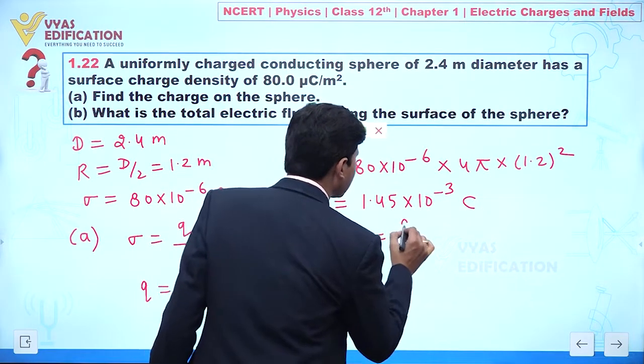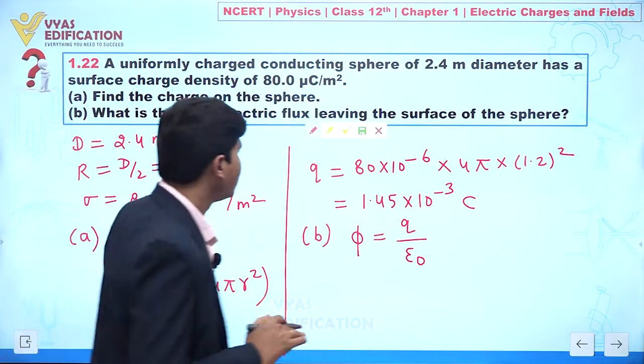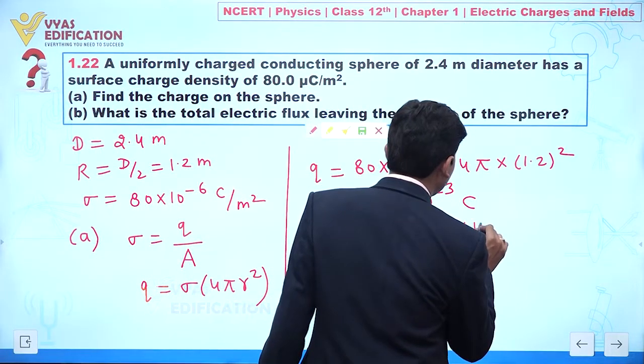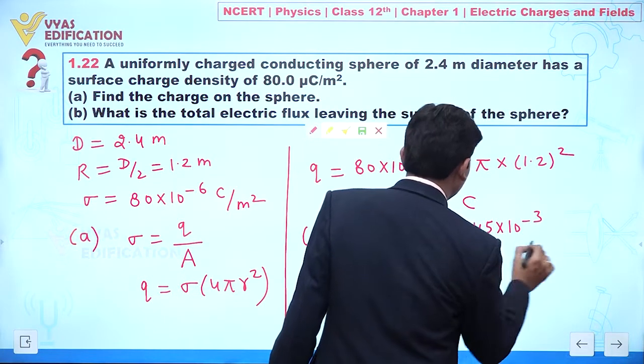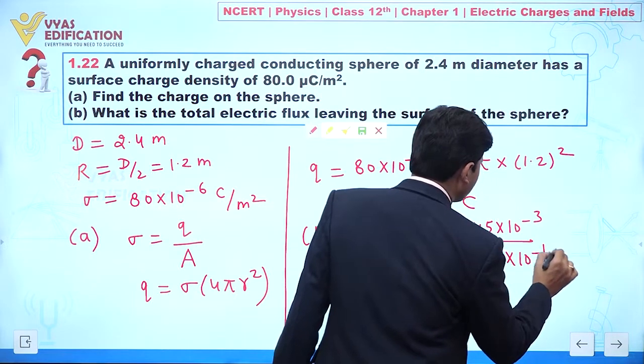We can say total flux, this is given by q net upon epsilon naught according to Gauss law. Q net is given to you 1.45 into 10 to the power minus 3 divided by 8.85 into 10 to the power minus 12.